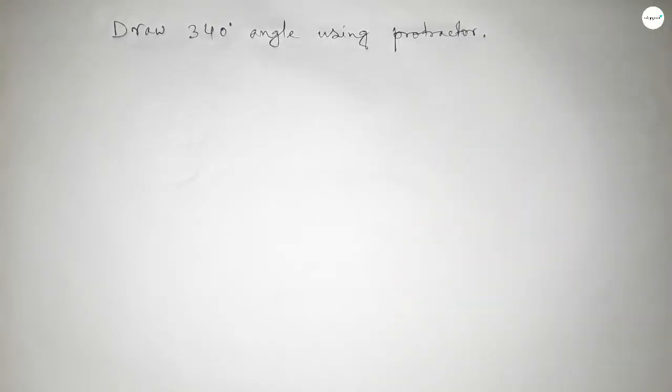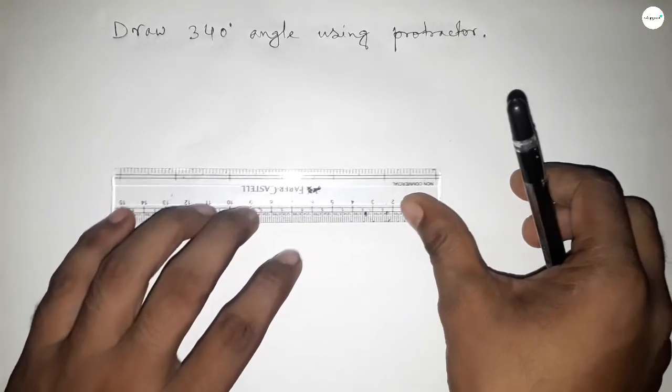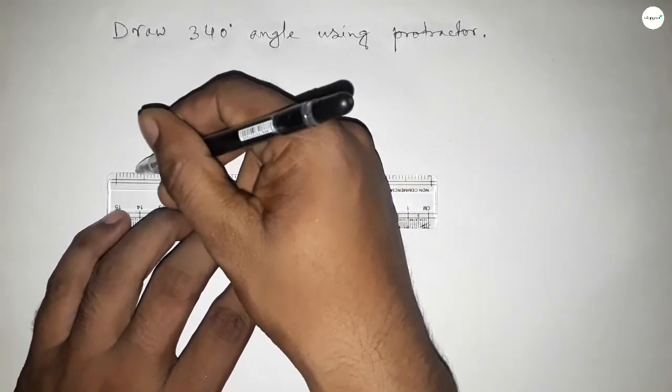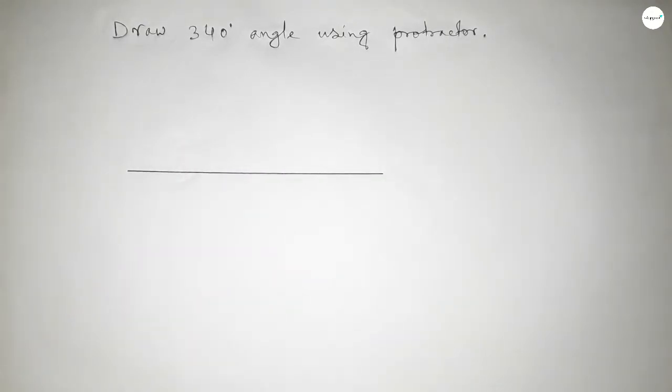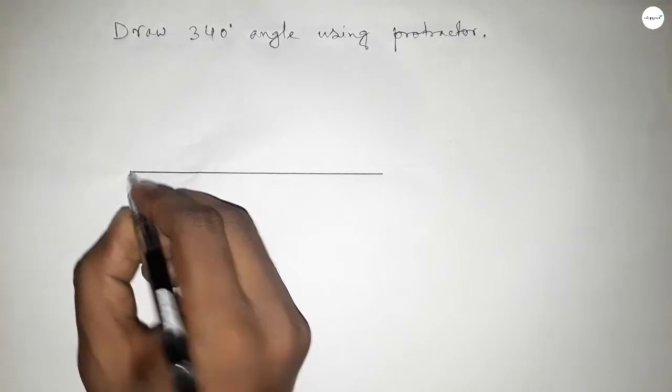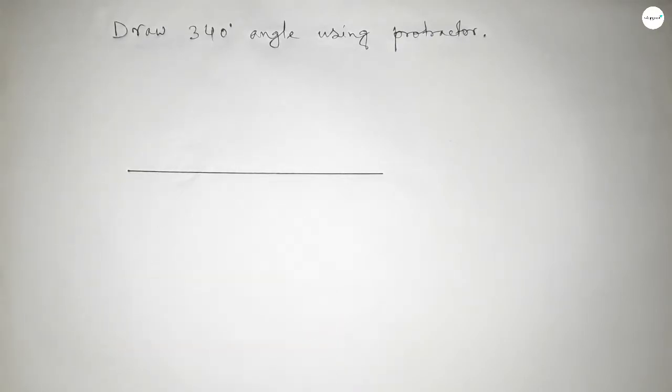So let's start the video. First of all, we have to draw a straight line of any length. Next, to draw the 340 degree angle, we place the protractor.